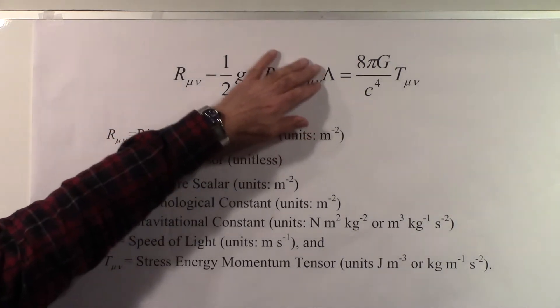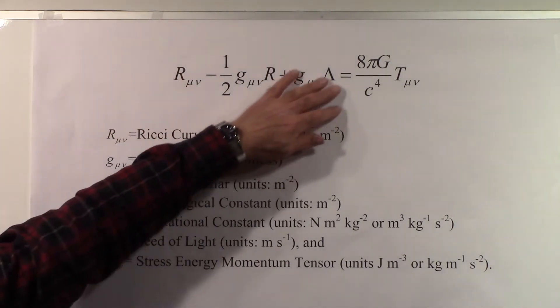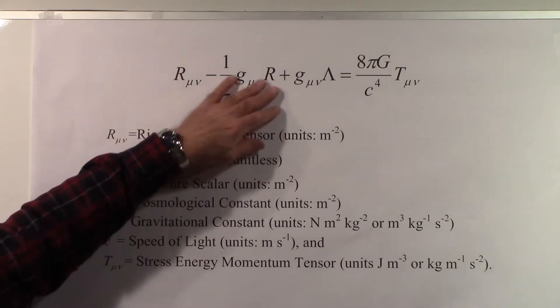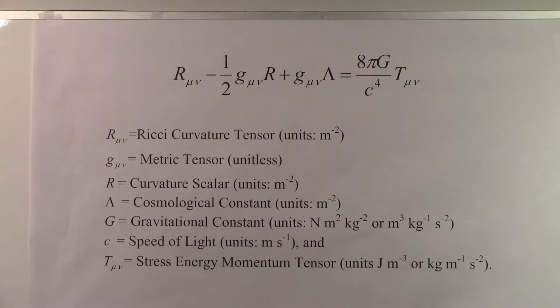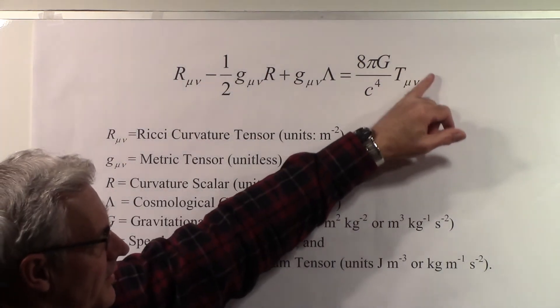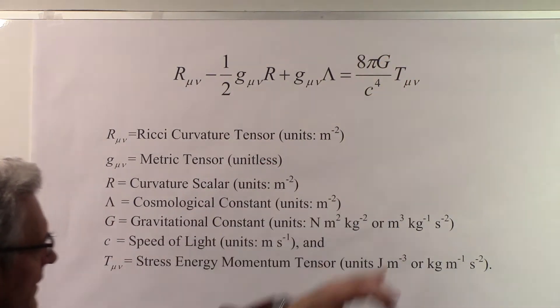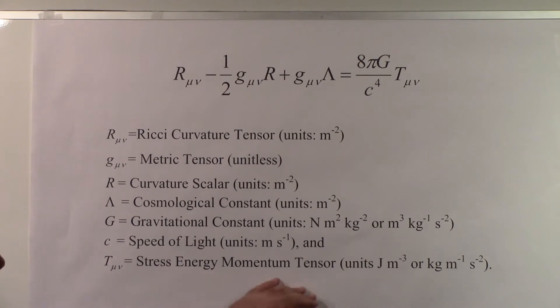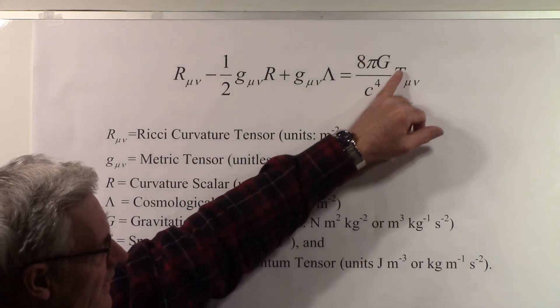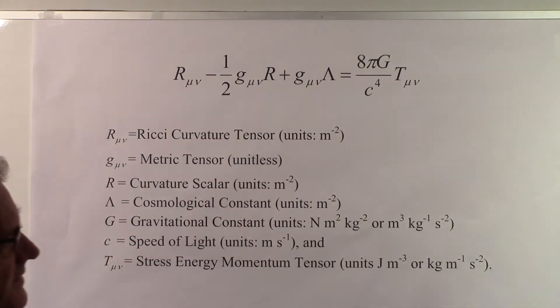this side of the equation represents the curvature of space-time. And this side over here, especially this quantity here, which is a stress-energy-momentum tensor, that represents, in a sense, energy and momentum.